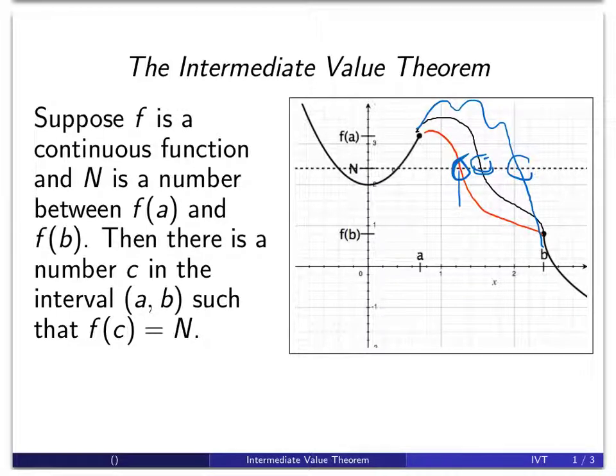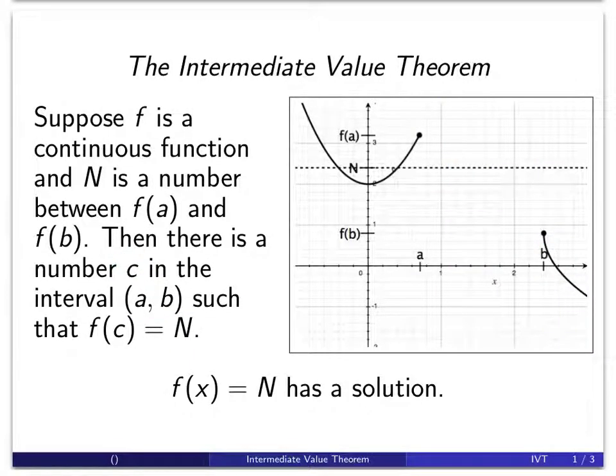So there's always some place where the graph crosses that dotted line. And if we trace it down, this is the value of c that we're talking about where we say there is a number c in the interval from a to b such that f(c) is equal to N. So really what this is all doing for us is it's saying that our function equaling N will have a solution provided that N is between f(a) and f(b).